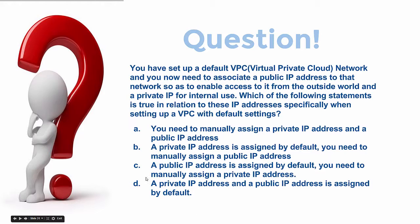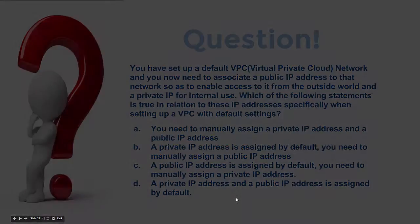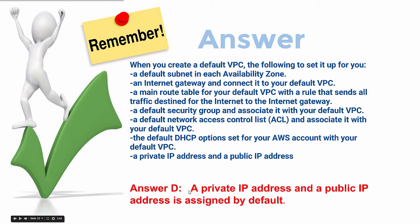The answer, if you didn't already know it, is the last one — they're both assigned by default. When you set up a VPC, the following things happen by default: a default subnet in each availability zone, an internet gateway, a main route table for your default VPC, a default security group — we'll go into more detail about route tables and security groups later — a default NACL, default DHCP options, and finally, both a private IP address and a public IP address are assigned by default. Which is the answer to our question.